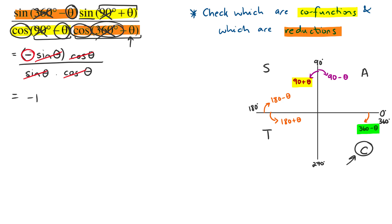That is co-functions — swapping between sine and cos. In the next video we're going to look at negative angles and questions where it becomes slightly more difficult to distinguish what we're dealing with. For example, cos of theta minus 180 is no longer one of our standard reductions, but we can see that we have all the right pieces. That's what we'll tackle in the next video.